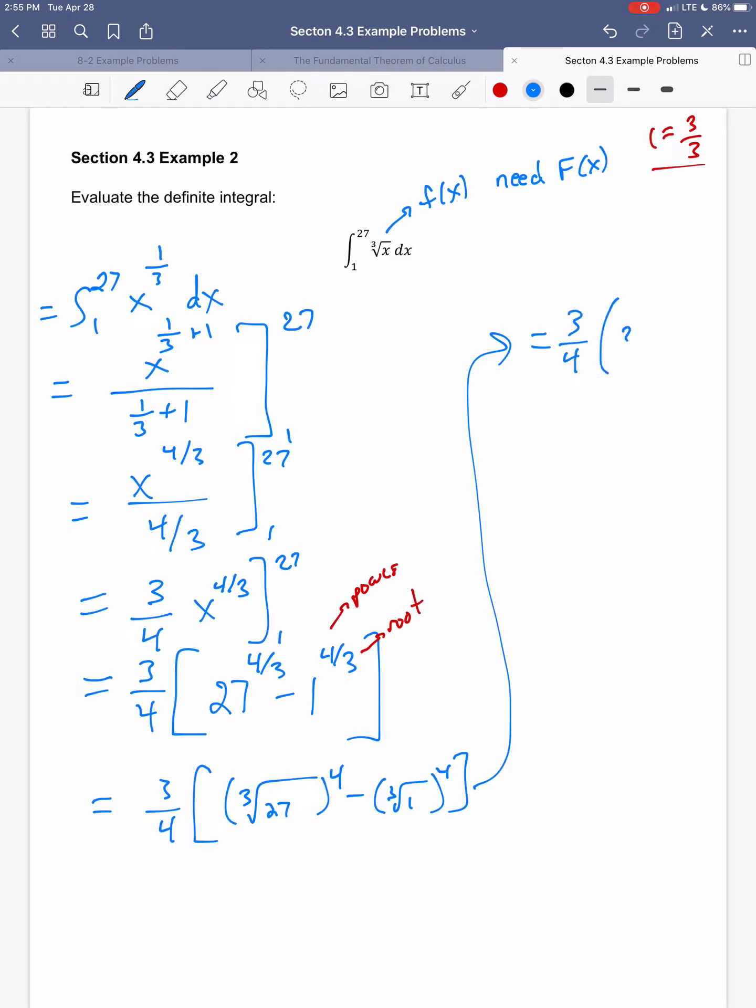So the cube root of 27 is 3. So I get 3 to the fourth. The cube root of 1 is 1. I get 1 to the fourth.